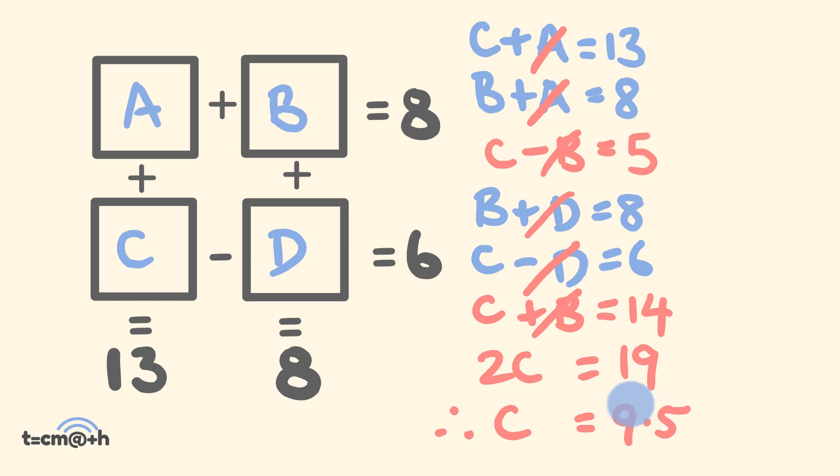So we can go through now and start substituting in some values. We know that C here is equal to 9.5. What else do we have? 9.5 take away what equals 6? This will be 3.5.